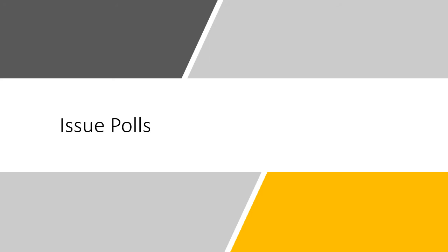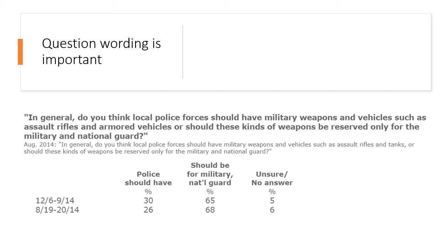I want to say a couple of things about issue polls and some of the different issues they face in addition to those election polls face. One thing election polls don't really have to worry about much, but issue polls do, is question wording. Question wording is very important — half the battle is formulating good questions. Pollsters will often formulate about nine different ways of asking the same question, then try to extrapolate what caused different results in order to get a more accurate picture of what people really think about certain issues.